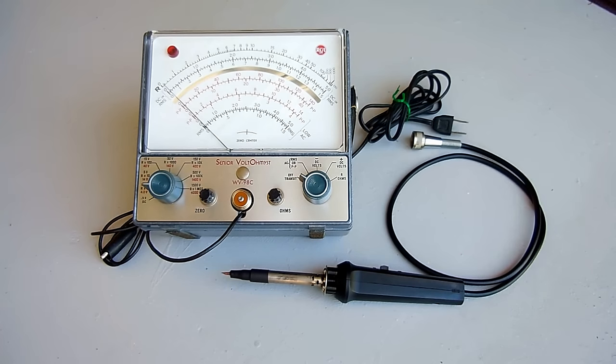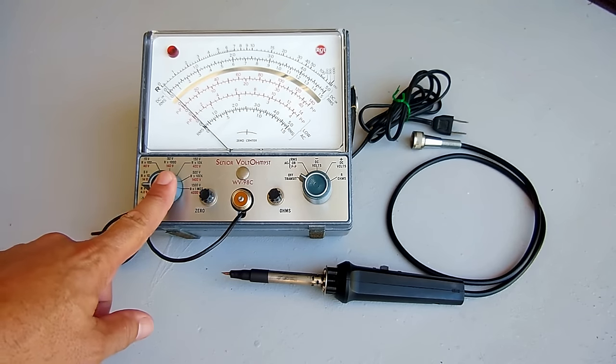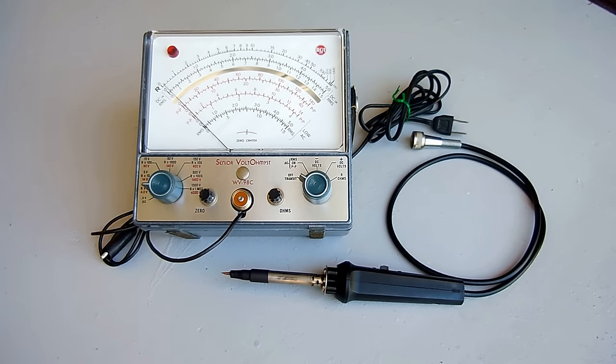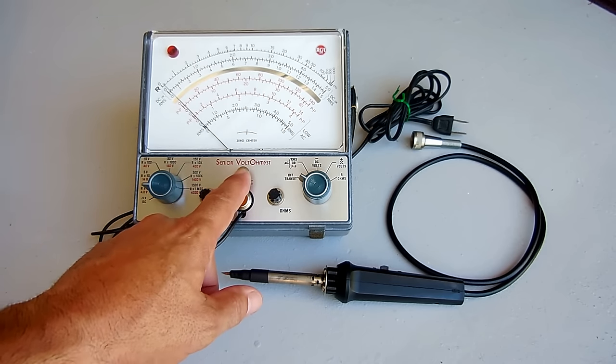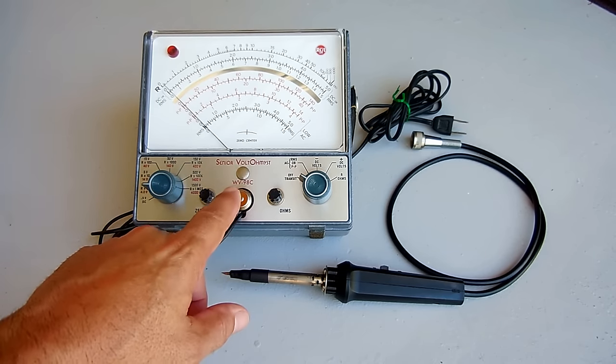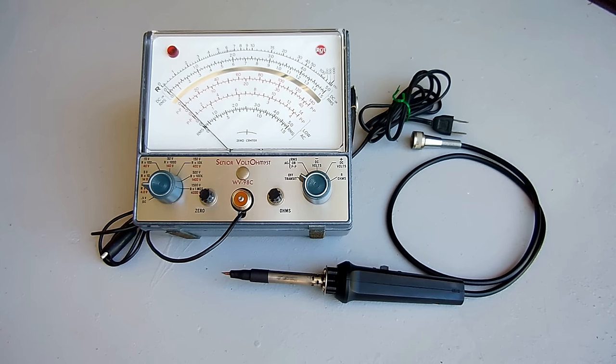In today's video we're going back to 1977 to take a look at this RCA VTVM, also known as a vacuum tube voltage meter. This one is made by RCA, it's a Senior Volt Ohmist, model WV98C.